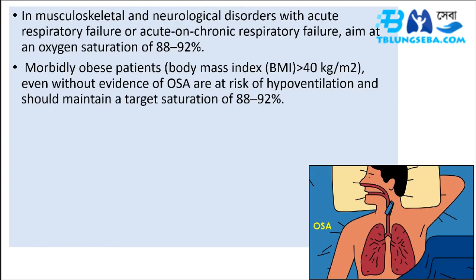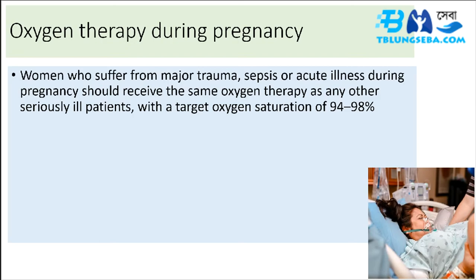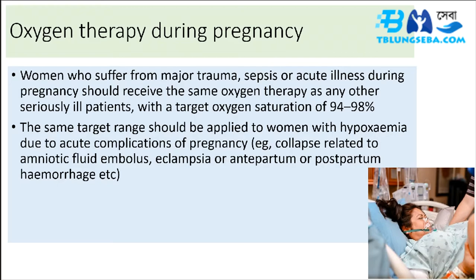Oxygen therapy during pregnancy: women who suffer from major trauma, sepsis, or acute illness during pregnancy should receive the same oxygen therapy as any other seriously ill patient, with a target oxygen saturation of 94 to 98%. The same target range applies to women with hypoxemia due to acute complications of pregnancy, such as collapse related to amniotic fluid embolus, eclampsia, or antepartum/postpartum hemorrhage.